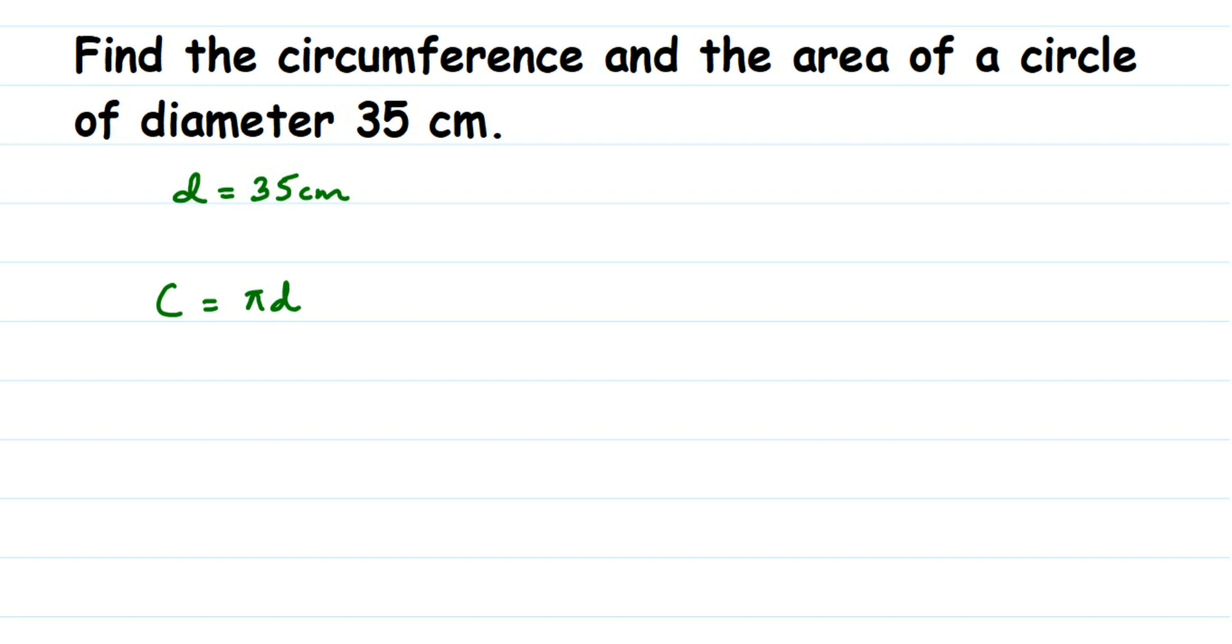So this is equal to pi value, I'm going to take it as 22/7, and the diameter is 35. We're going to cancel here 7 and 35. 7 ones are 7, fives are 35. So the answer will become, just multiply 22 and 5, we'll get 110. So 110 centimeter is the circumference.